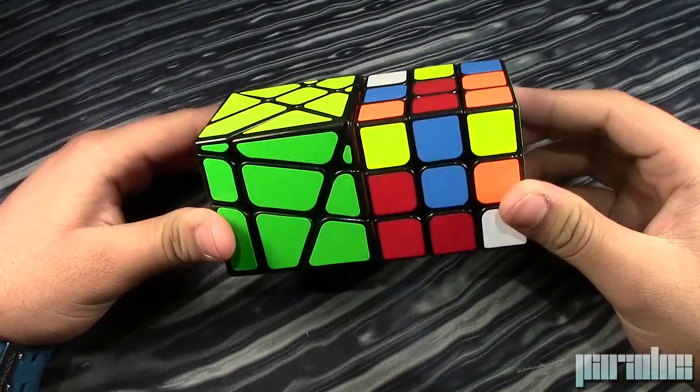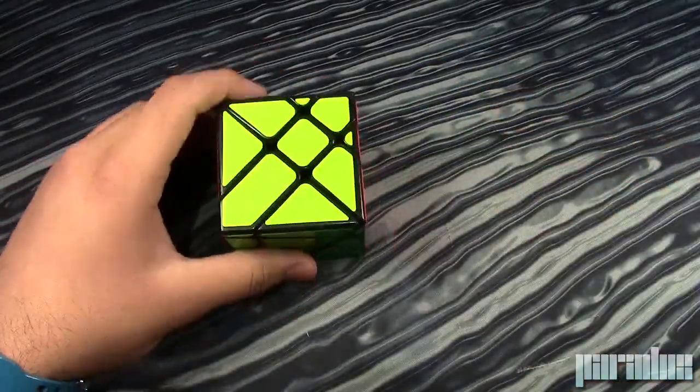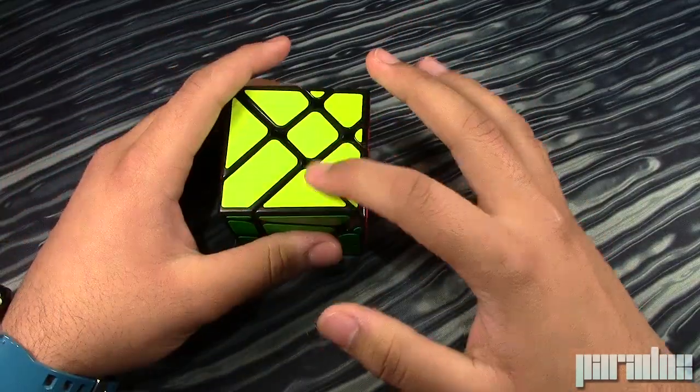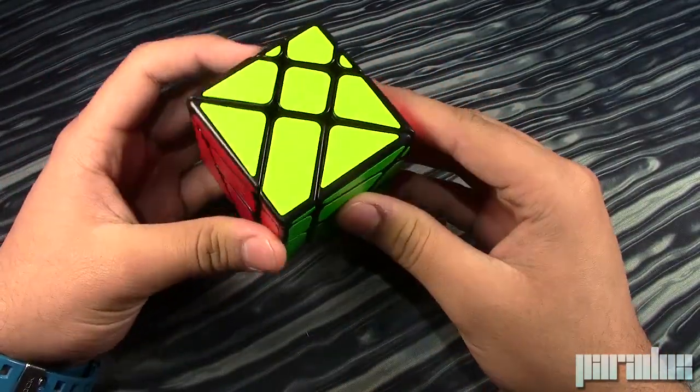So this is a Yilang right here. As you can see, it's slightly larger than that. I think this is probably like 57mm, or maybe even 58. So let's get into first turns.